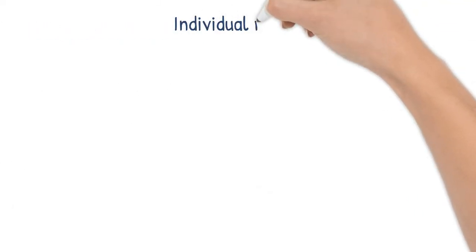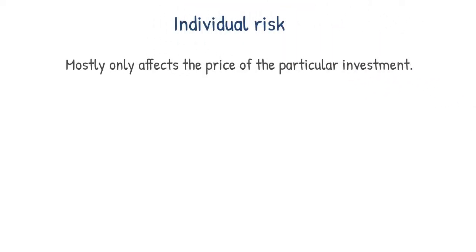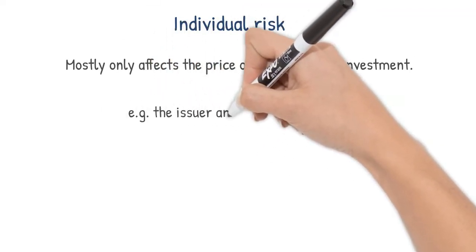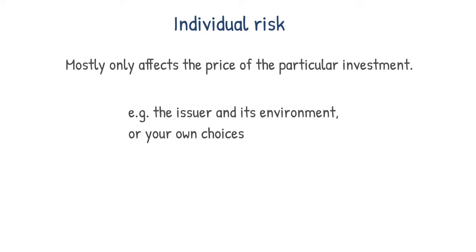Individual risk is a slightly different matter. After all, it mostly only affects the price of the particular investment. An example is events affecting the asset, for example events with the issuer. But individual risk is your own decision, that when to buy or sell an asset, and to what extent.